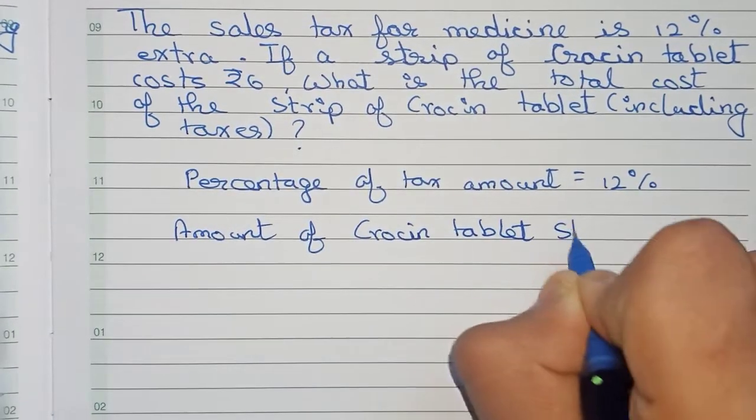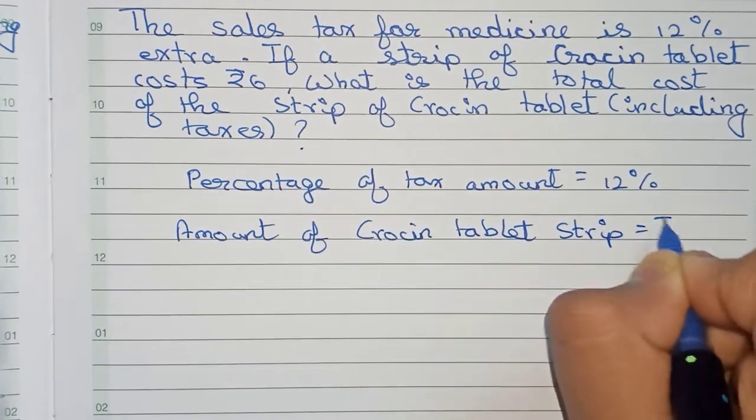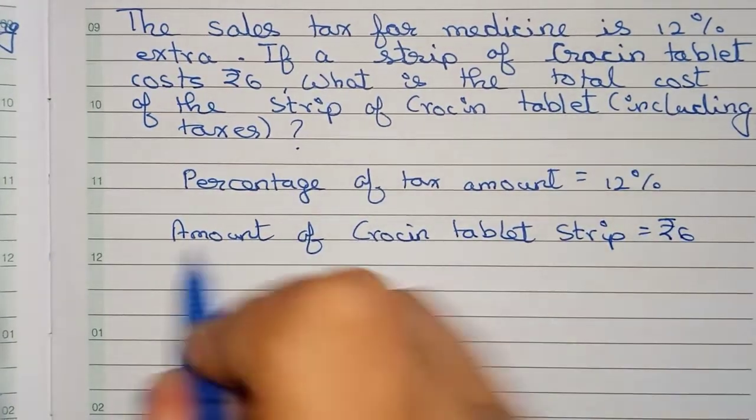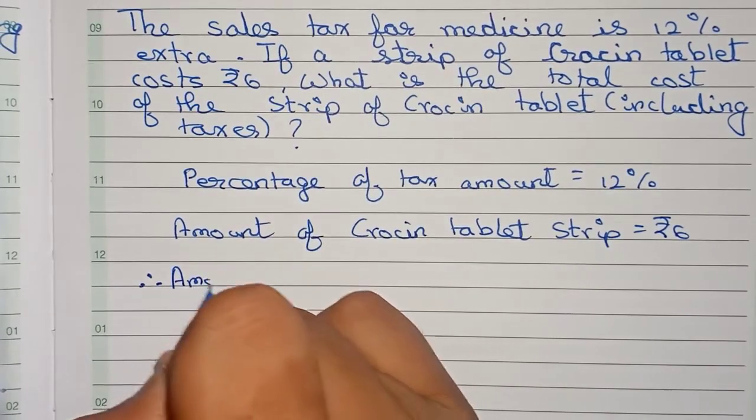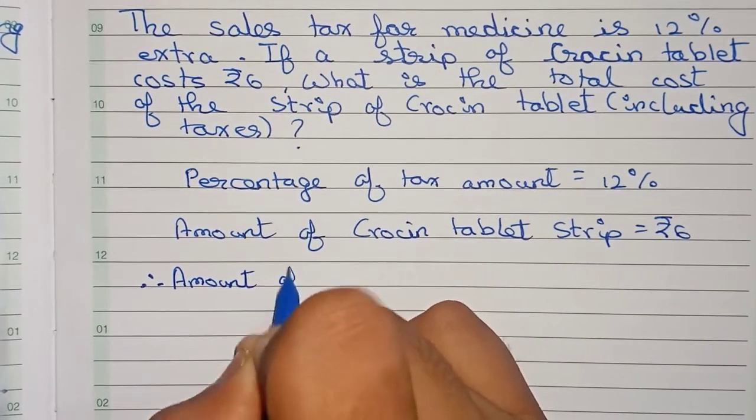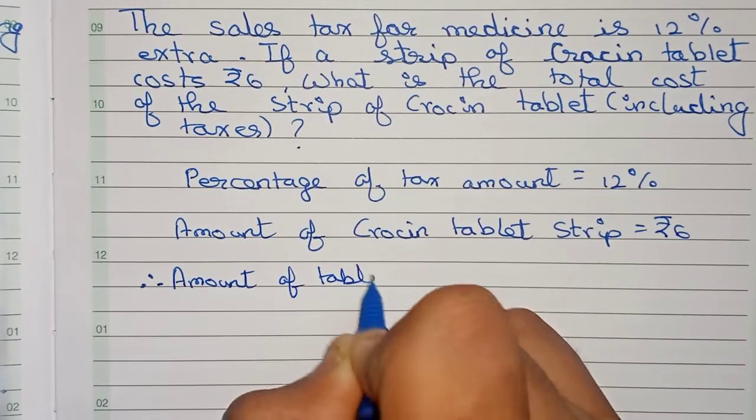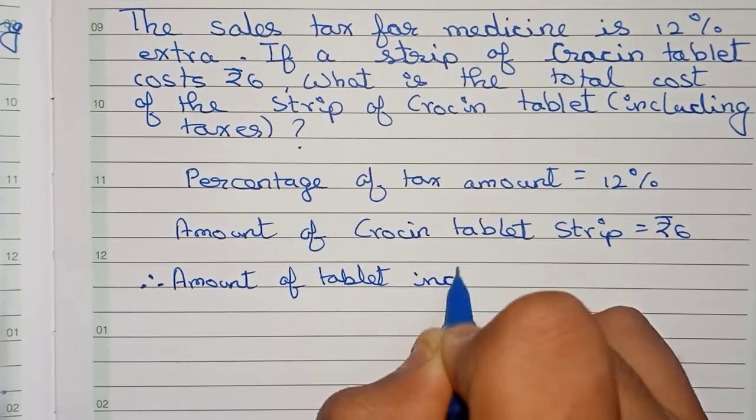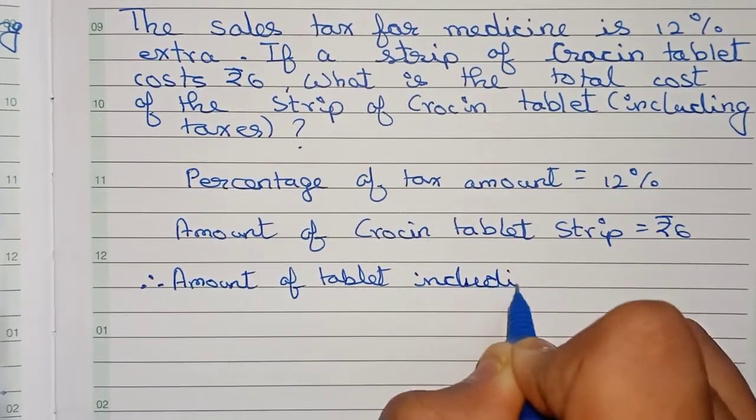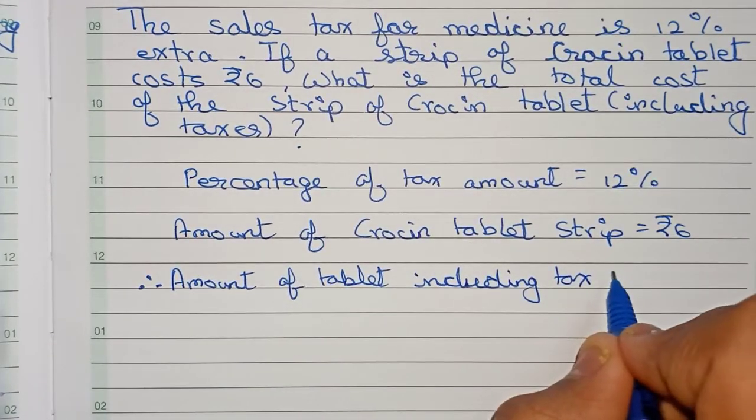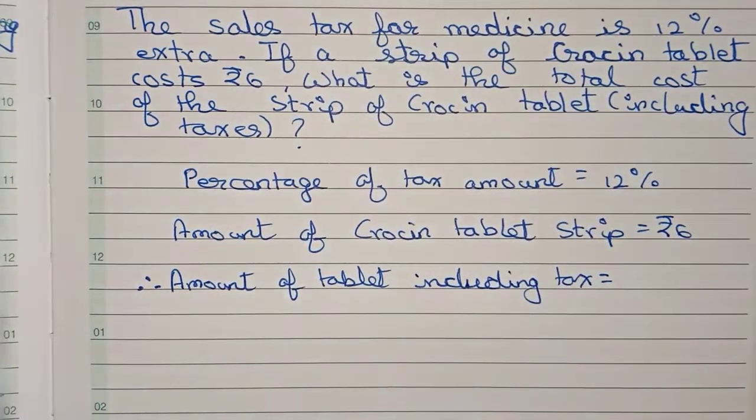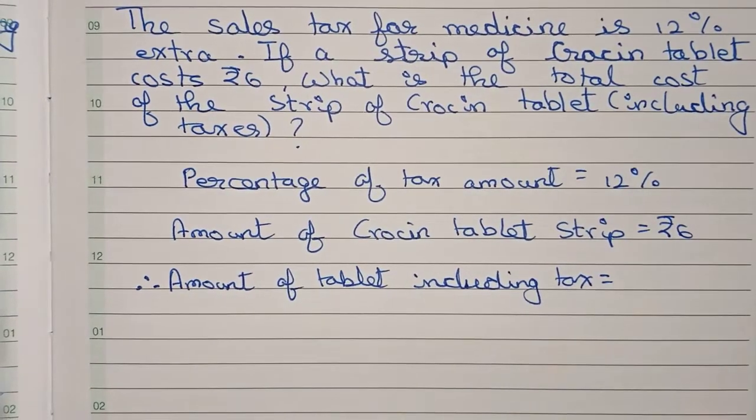So now, therefore, the amount of tablet including tax equals to... So for this, first you have to find out the amount of tax.